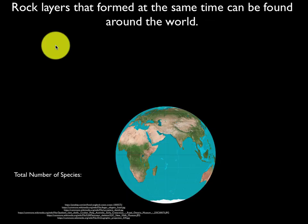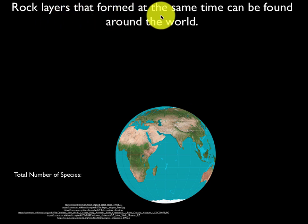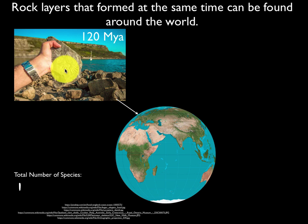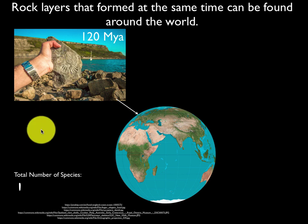We know that when sediments settle out and form rock layers, there are sometimes fossils recorded within those layers. So what we can do is look for rock layers that formed all around the world at about the same time. We can start in one place, find a layer that's 120 million years old, and basically count the number of different types of animals — the number of species in there. And here we go — we have one of our first fossils.